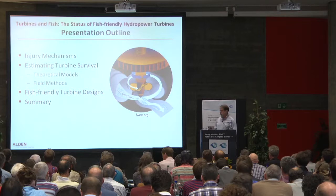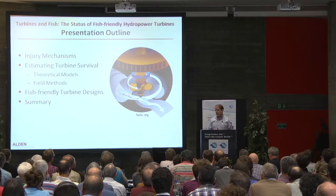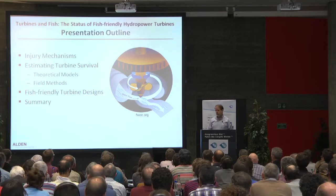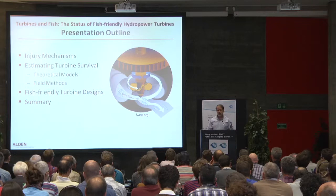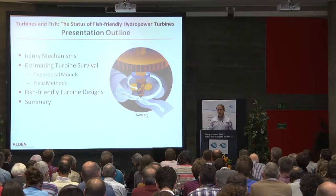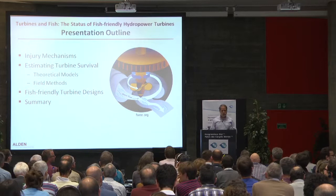Armin Peter asked me when I was putting my talk together if I could also discuss the injury mechanisms — the types of things that injure fish when they go through turbines — and how do we estimate turbine survival. There are basically two approaches: one is theoretical models, particularly to estimate blade strike, and there are also several field methods that have been employed with different tagging technologies. Then finally I'll go into the fish-friendly turbine designs, ones that we've had experience with in the U.S., and cover the low-head turbines, and then summarize everything at the end.